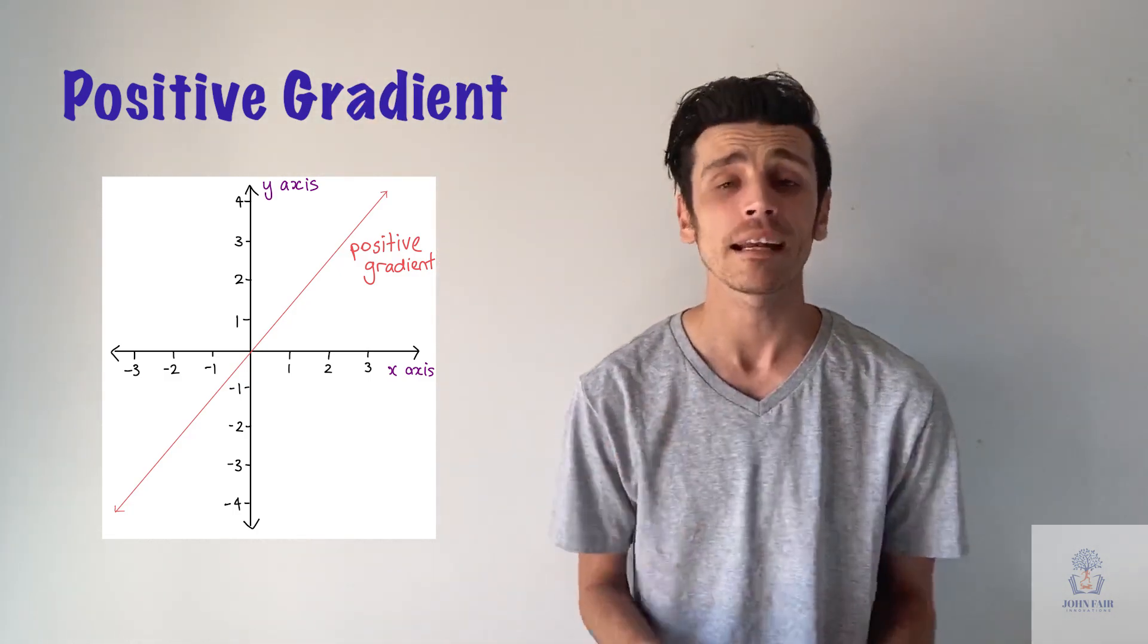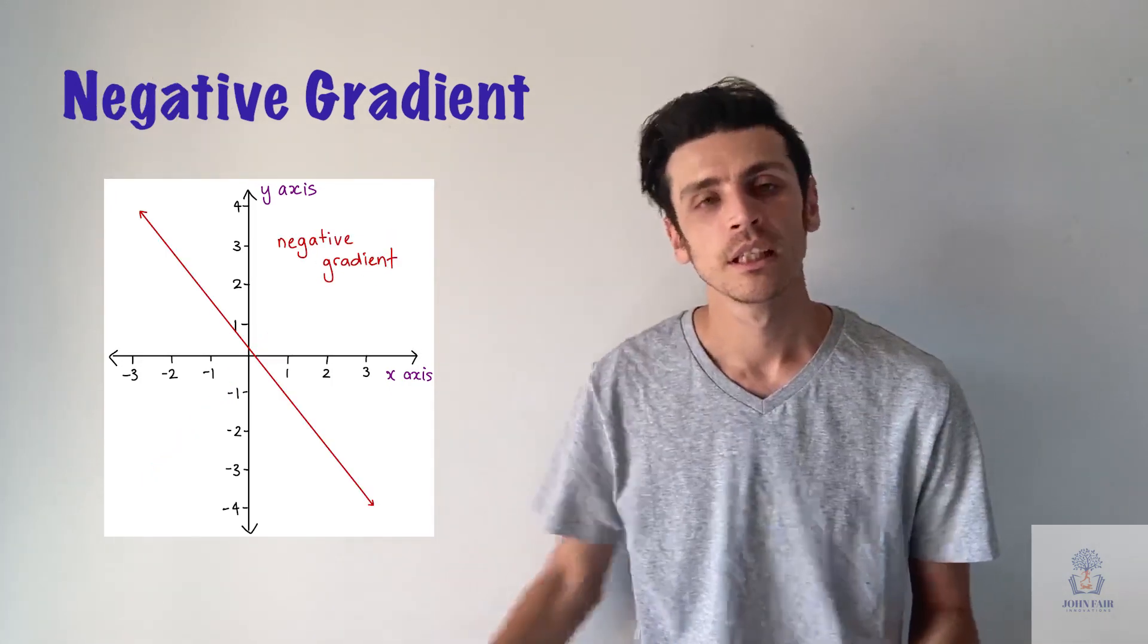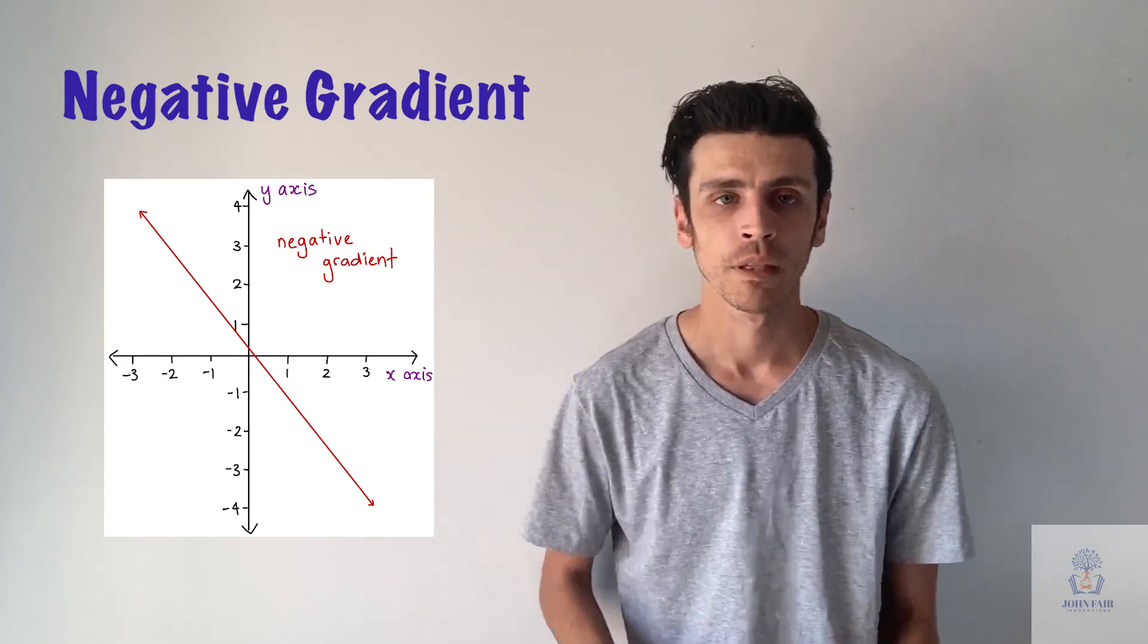If you have a negative m, so a negative slope, a negative gradient, it's going to look like it's going downwards. So it's looking like it's constantly going down and down and down. So this is what m does to your line. It changes how it looks if it's in the positive direction or the negative direction.